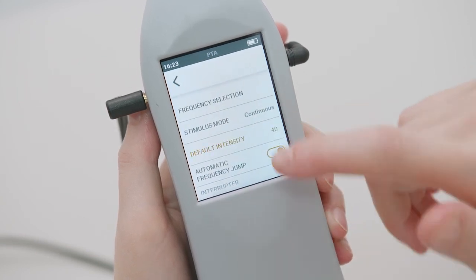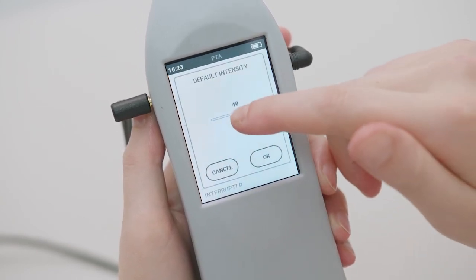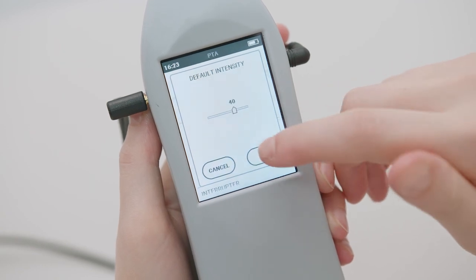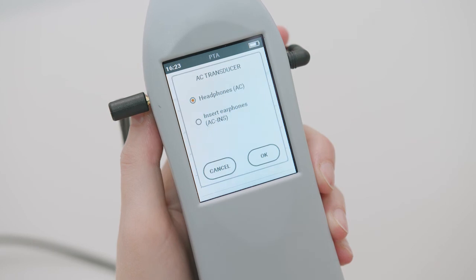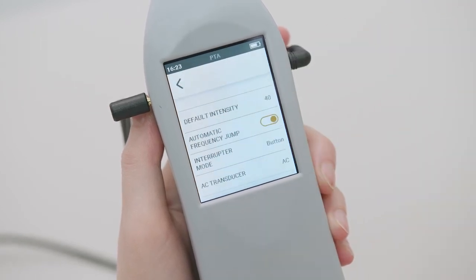It is also possible to set a default intensity. The transducer must be set from this settings menu with the ability to choose between supra-aural and insertion caps.